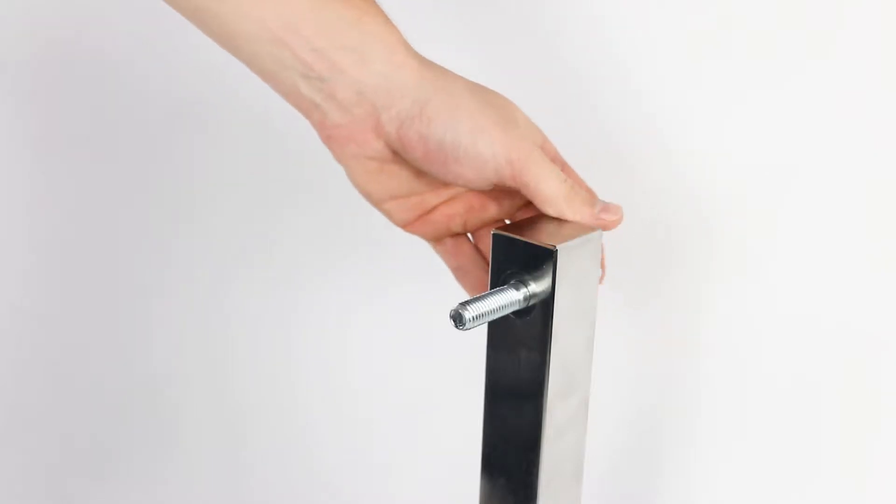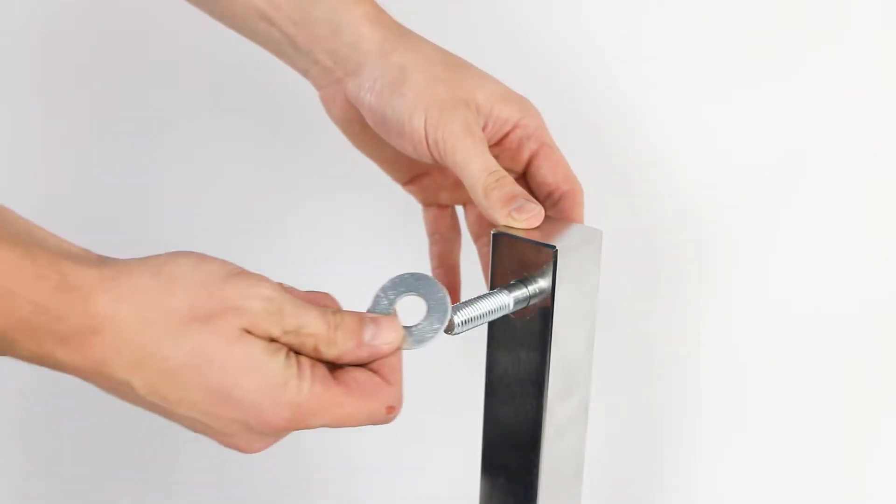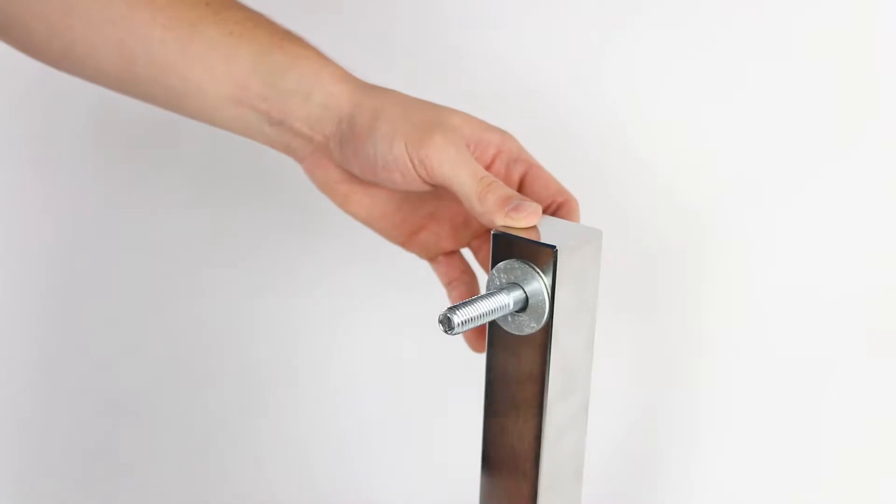Using the two bolts supplied, bolt the two arms against the inside of the two vertical posts. Place a large washer between each arm and post.